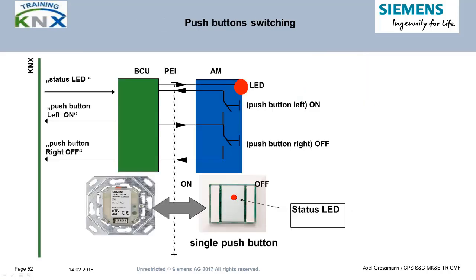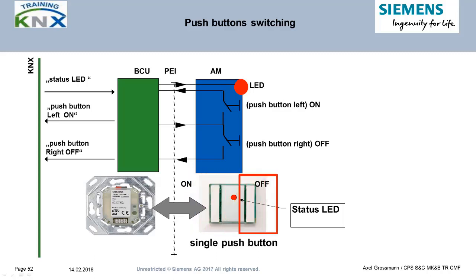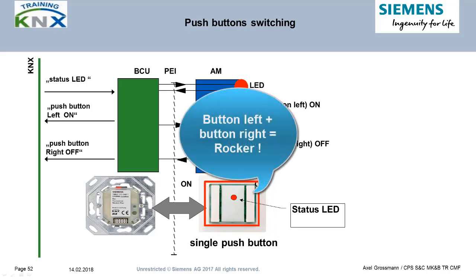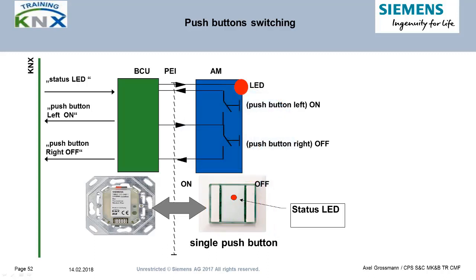Let's now talk about the principle of a push button sensor. This sample shows the simple rocker function. The push button has two single buttons grouped to a rocker — therefore we call it a push button single. Other manufacturers, who refer to the number of buttons, might call it a push button double. Therefore it is always important not only to compare names but also the hardware directly.